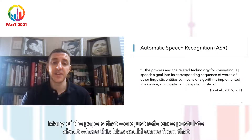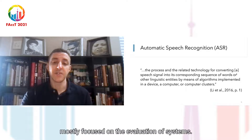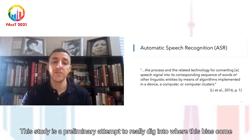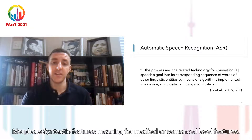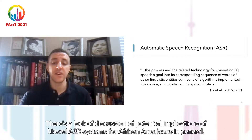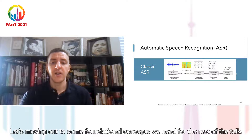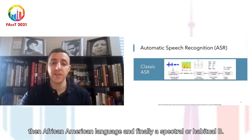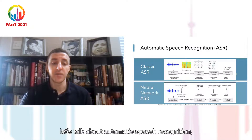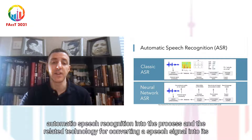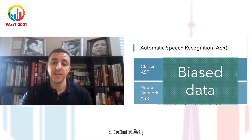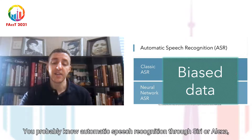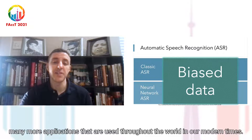Automatic speech recognition is the process and related technology for converting a speech signal into its corresponding sequence of words or other linguistic entities by means of algorithms implemented in a device, a computer, or computer clusters. You commonly know it probably by Siri or Alexa, but ASRs are moving far beyond virtual assistants to many places that affect our daily lives in important ways. Traditional ASR models use statistical models to process speech, while more modern models are moving towards neural networks, usually a combination of neural networks and Markov models. Either way, each model is based on the training data it is given. And if there is biased data within these sets, it can cause major problems of bias within the models and their performance — and that's what we're investigating today.